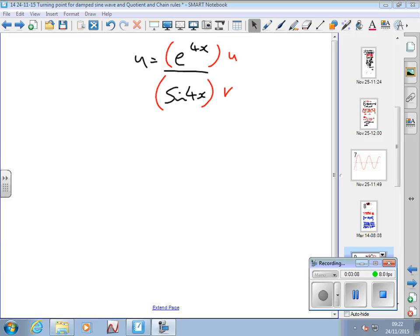Factorise if possible, because if you're expected to find turning points later, that's going to equal zero, and anything you've taken outside the bracket will disappear. So it's a good idea to try and factorise. That's what we're going to do now: apply the rule, then use algebra to simplify it.